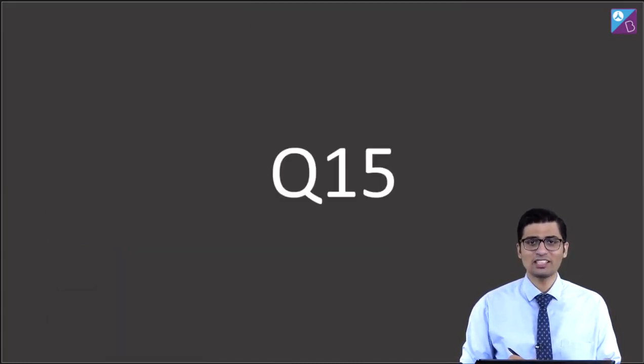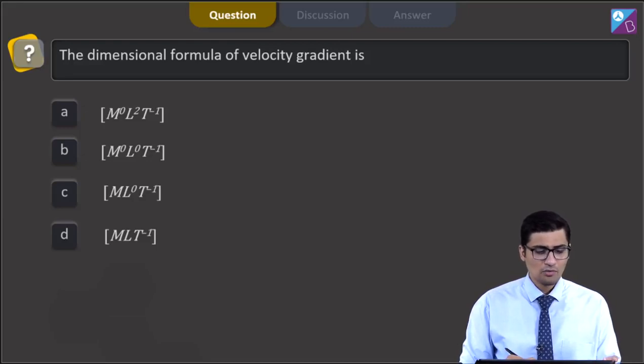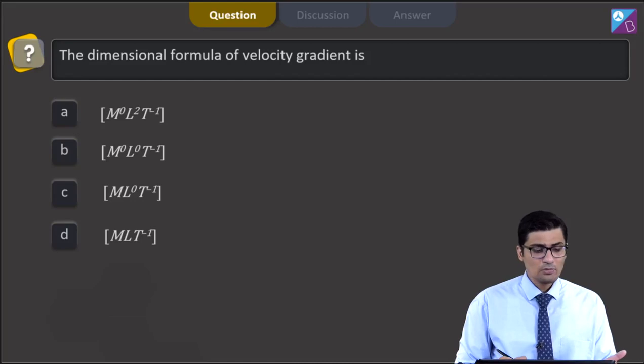This is question 15. The question says the dimensional formula of velocity gradient is. The four options are M0L2T-1, M0L0T-1, ML0T-1, or MLT-1.